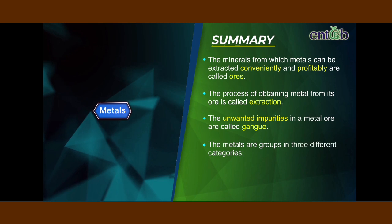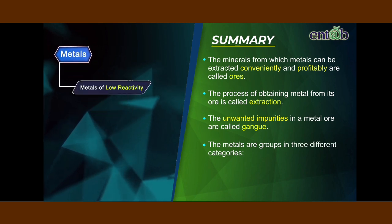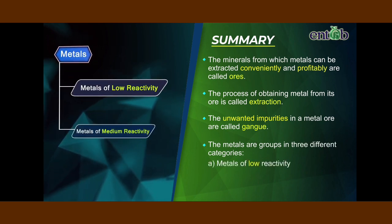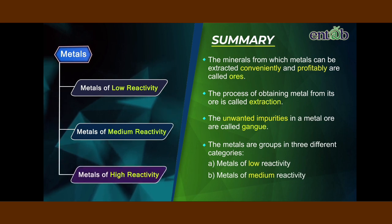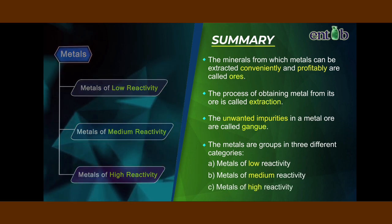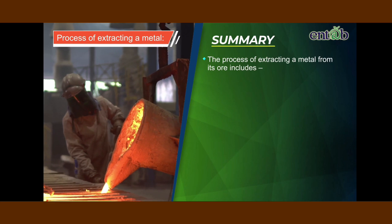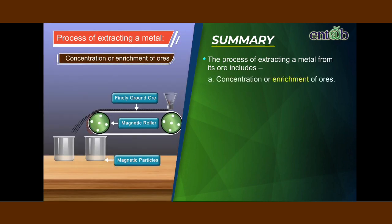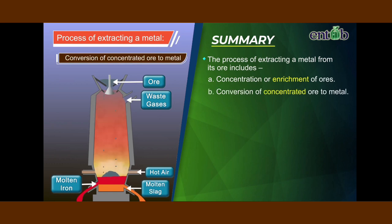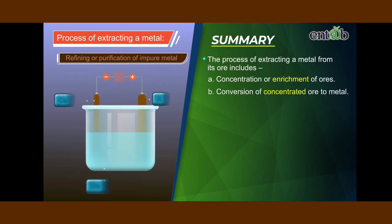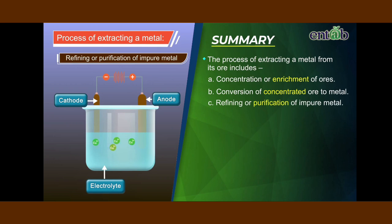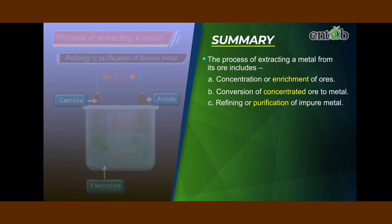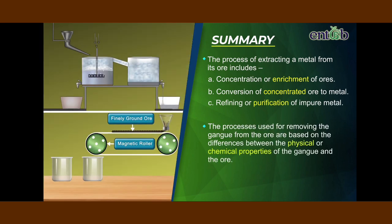The metals may be grouped into three different categories: metals of low reactivity, metals of medium reactivity, and metals of high reactivity. The process of extracting a metal from its ore includes concentration or enrichment of ores, conversion of concentrated ore to metal, and refining or purification of impure metal. The processes used for removing the gangue from the ore are based on the differences between the physical or chemical properties of the gangue and the ore.